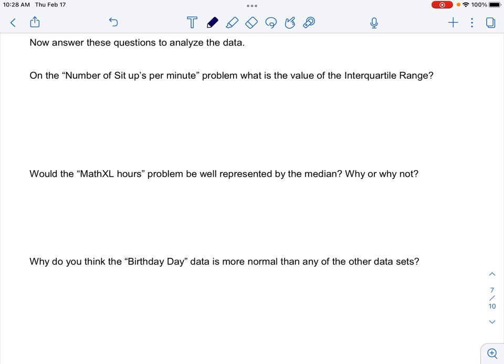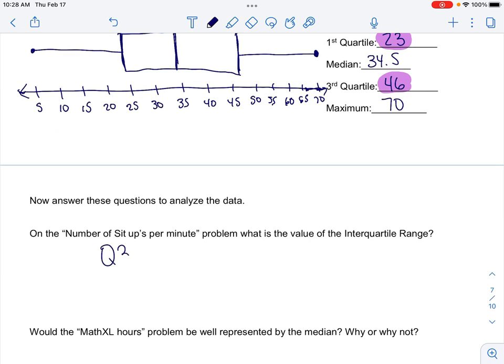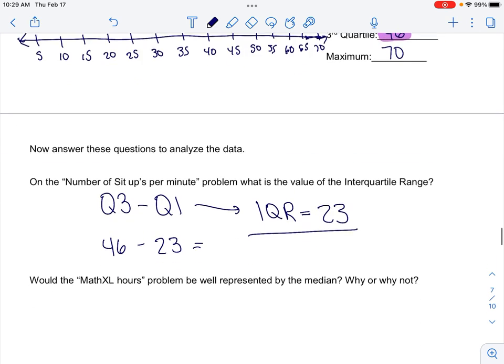Review from the other day on the number of sit-ups per minute problem. What is the value of the interquartile range? If you recall, the interquartile range is just the quartile 3 and the quartile 1 subtracted. So, it's just Q3 minus Q1. So, 46 minus 23. And that gives you your interquartile range of 23.